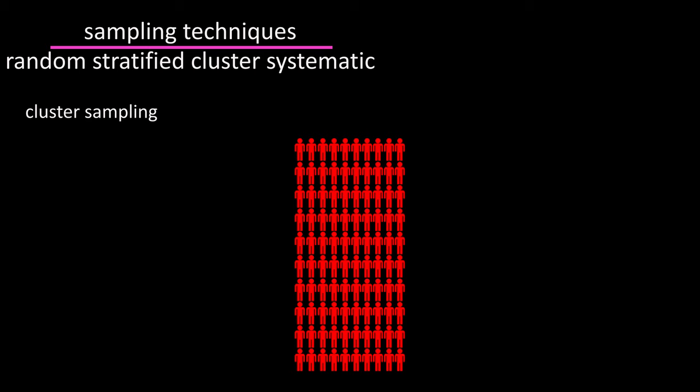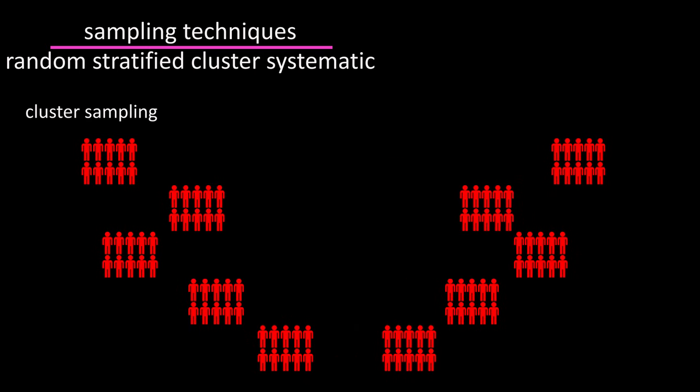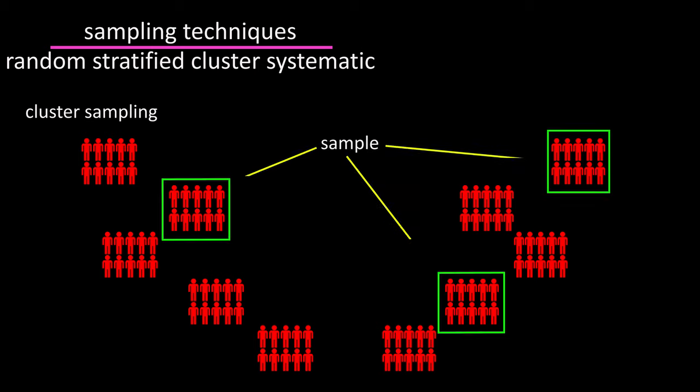A cluster sample is obtained by dividing the population into sections or clusters, then randomly selecting one or more of the clusters and using all of its members as members of the sample. This is often used when the population is large or there's a large geographic area.